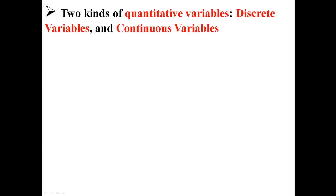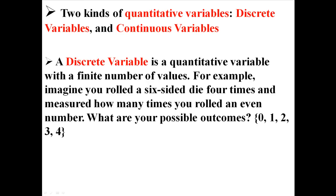When we talk about quantitative variables, we can further classify those into discrete variables and continuous variables. A discrete variable is a quantitative variable with a finite number of values. For example, imagine you rolled a six-sided die four times and measured how many times you rolled an even number. Your possible outcomes would be zero, one, two, three, and four.